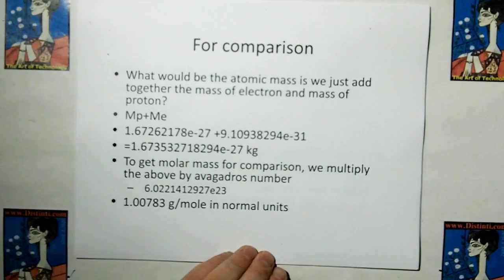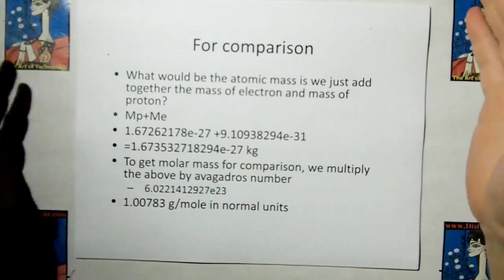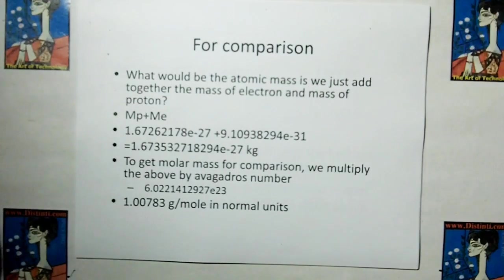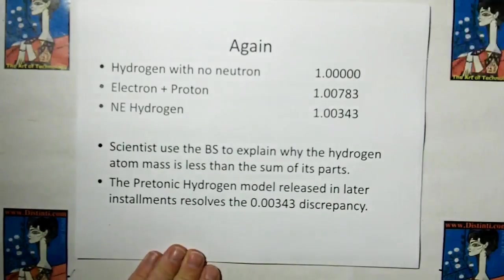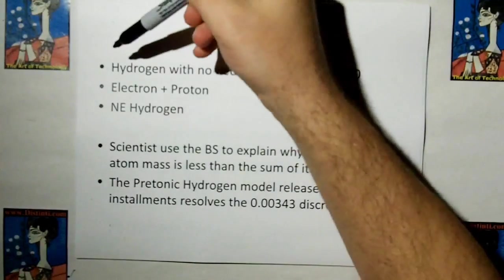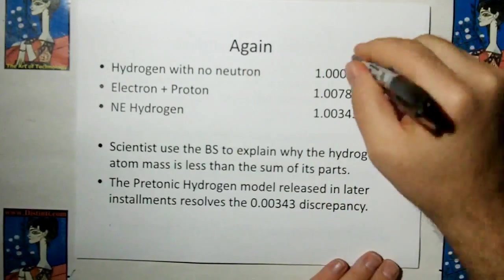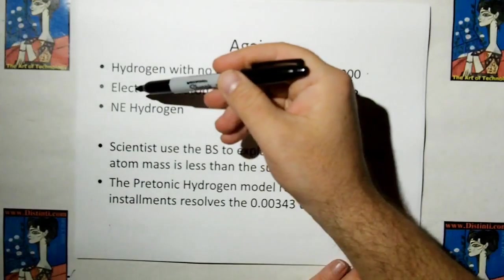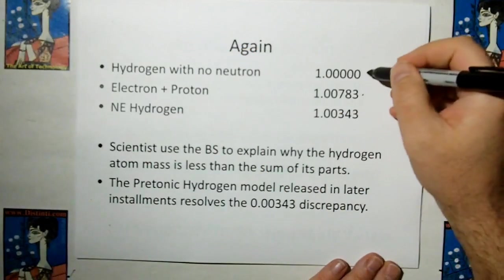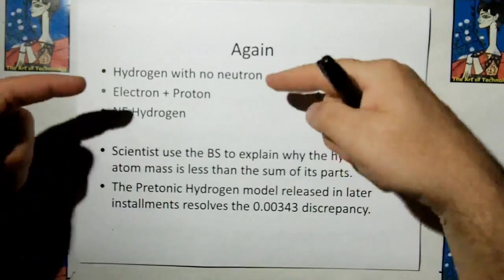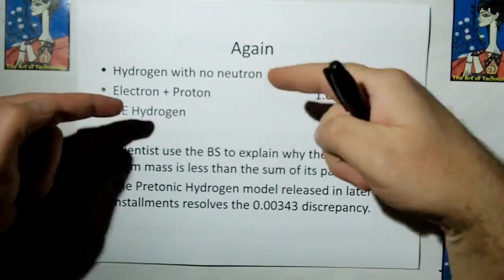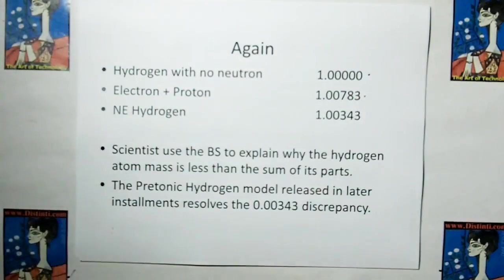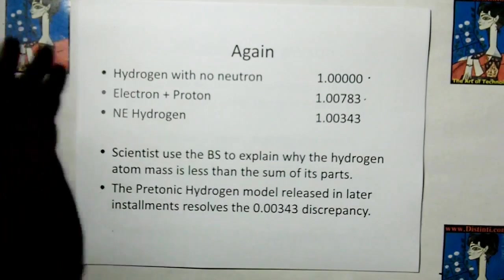Now for comparison, one of you might say, what would the atomic mass be if we just added up an electron and a proton? The answer is 1.00783 grams per mole. So the real hydrogen with no neutron is 1 gram per mole. The addition of the mass of an electron and proton is larger in mass than the hydrogen atom. This is an electron and proton, and this is an electron and a proton. But this has more mass than this. How can that be? Where did the mass go?